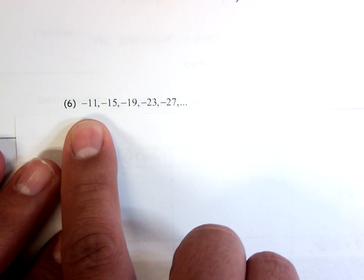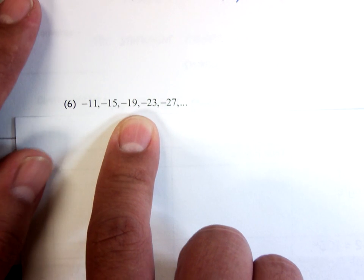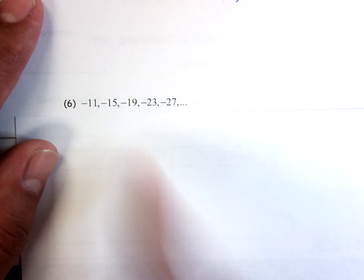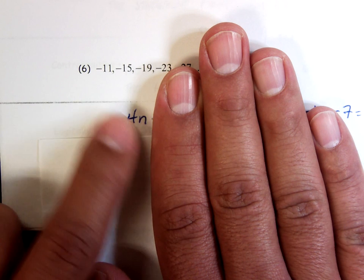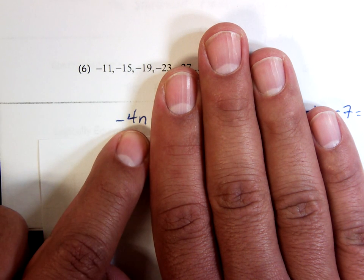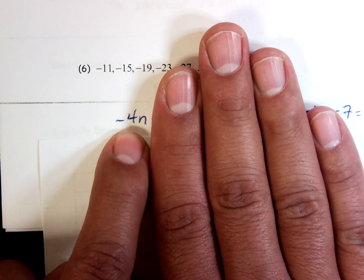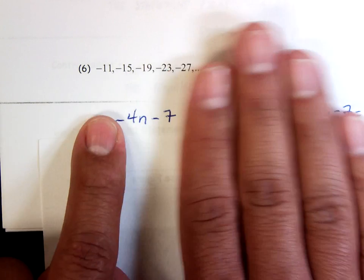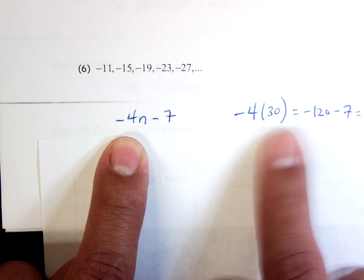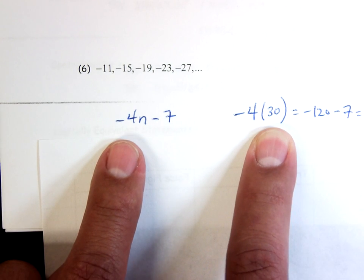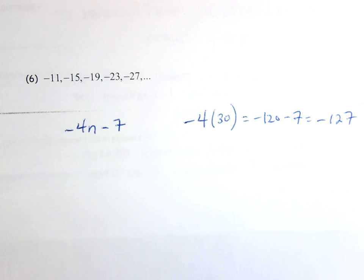Last sequence: −11, −15, −19 — going down by 4, so the difference is negative 4. The nth term starts with −4n. When n equals 1, negative 4 times 1 is negative 4, but the first term is negative 11, so subtract 7. The nth term is −4n − 7. For the 30th term, plug in 30: −4 times 30 minus 7 gives negative 127.